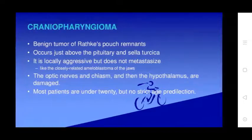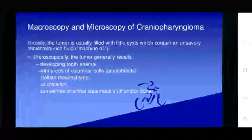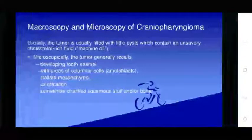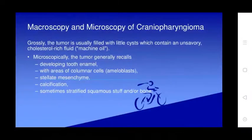Craniopharyngioma is a benign tumor arising from Rathke's pouch remnants, occurring above the pituitary and sella turcica. It is locally aggressive but does not metastasize. The optic chiasm and hypothalamus are commonly damaged. Most patients are under 20 years old but there is no strict age restriction. Grossly, the tumor is filled with cystic contents including cholesterol-rich fluid. Microscopically, the tumor resembles developing tooth enamel, with columnar cells, stellate reticulum, calcifications, and squamous epithelium.